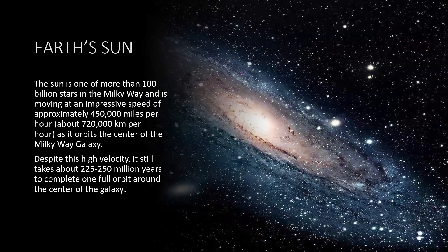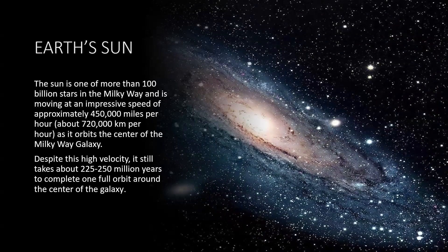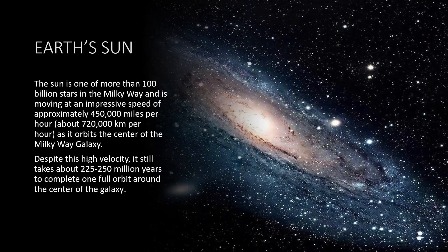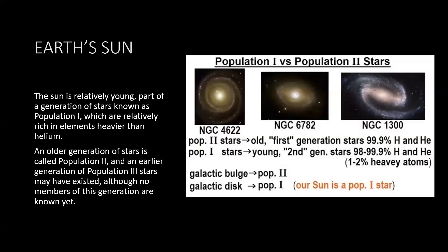Now the Sun itself is one of more than 100 billion stars in the Milky Way, and is moving at an impressive speed of approximately 450,000 miles per hour, or about 720,000 kilometers per hour, as it orbits the center of the Milky Way galaxy. However, even though it travels at such high speeds, it still takes about 225 to 250 million years to complete one full orbit around the center of the galaxy. It's going fast, however, because the size of the galaxy is so huge, it takes 225 to 250 million years to complete one circular journey around the galaxy, just like it takes Earth one year to go around the Sun.